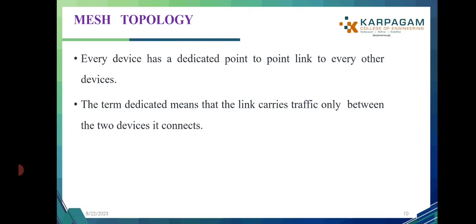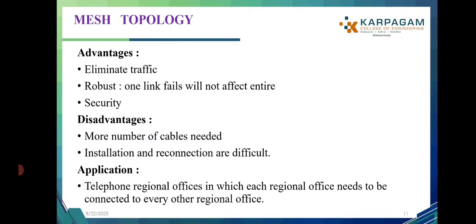In mesh topology, to measure the total number of ports for each device, the equation is n minus one, where n is the total number of devices connected in the network. To measure the total number of dedicated links, the formula is n × (n − 1) / 2, where n is the number of devices or nodes or stations connected in the particular network.